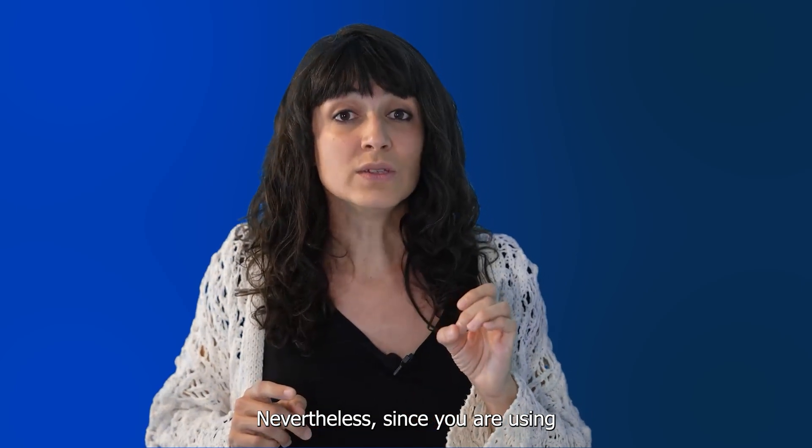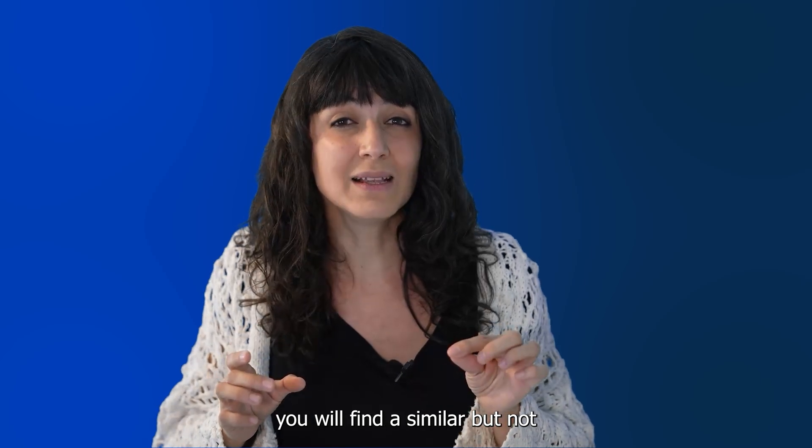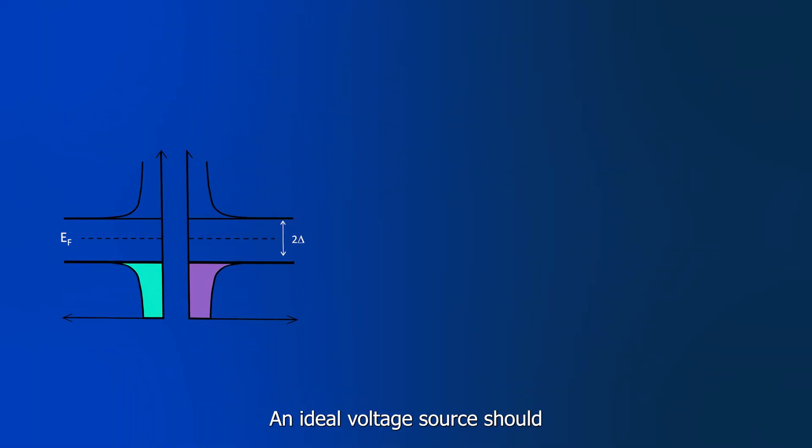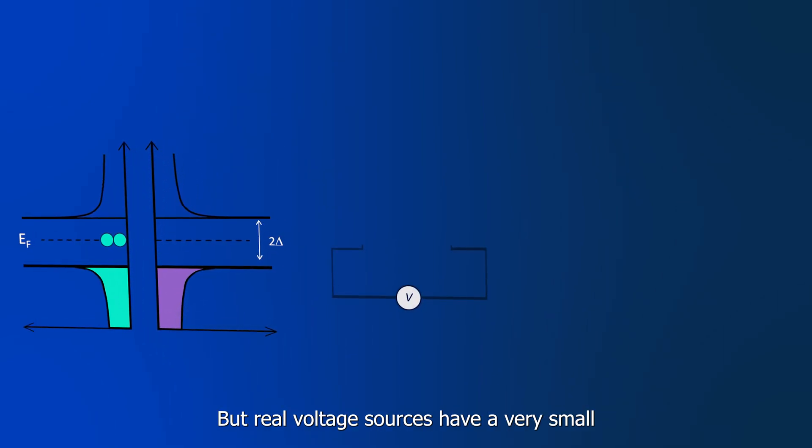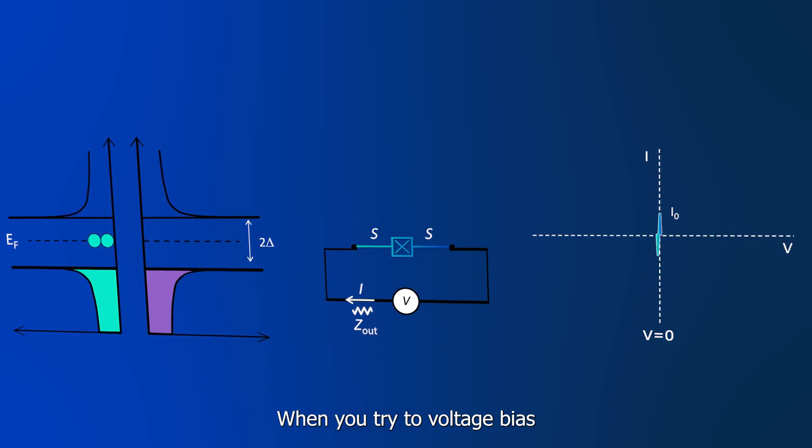Nevertheless, since you are using a real-world voltage source, you will find a similar but not exactly equal process. An ideal voltage source should have zero output impedance, right? But real voltage sources have a very small but non-zero output impedance.